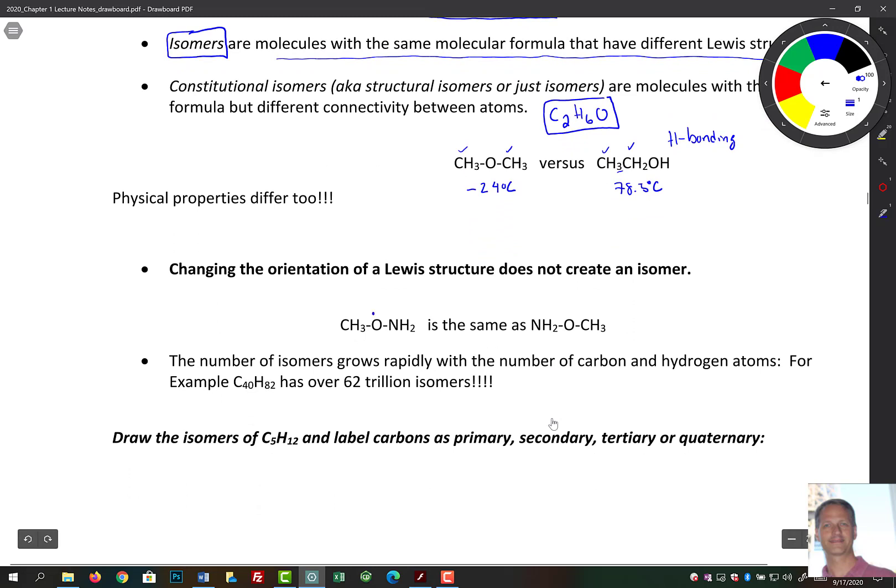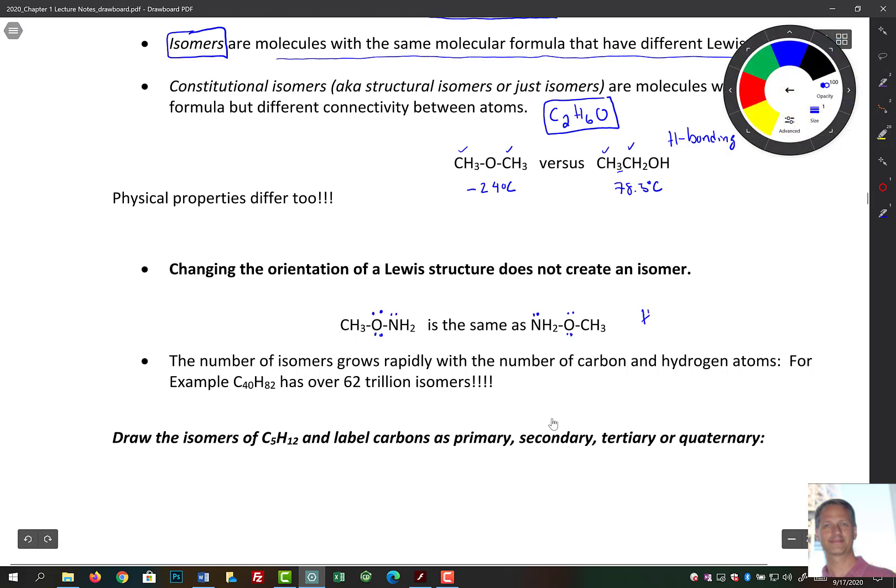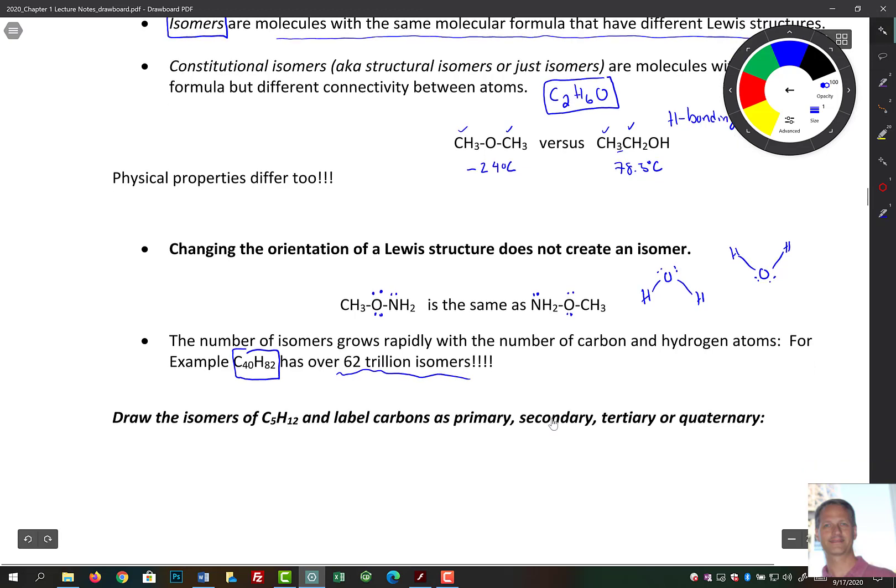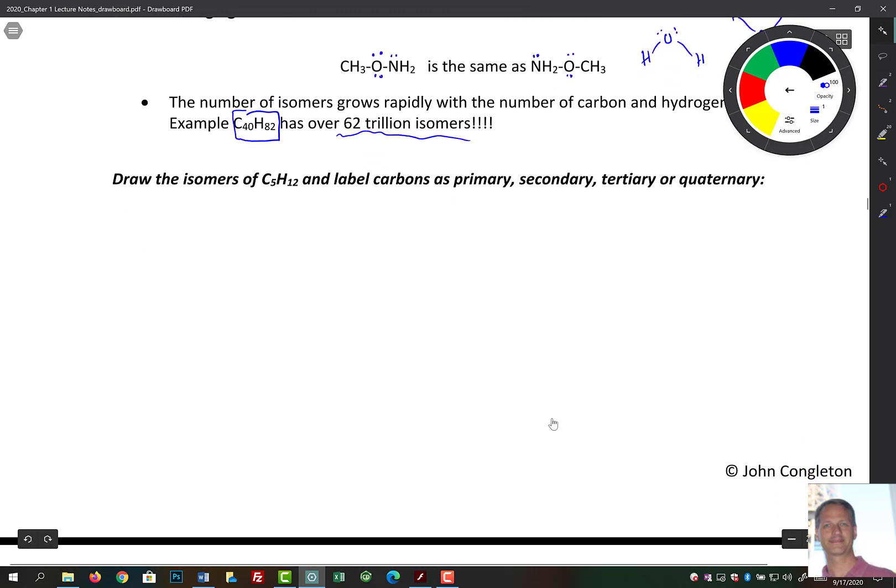So if we look down here below, here's a CH3 connected to an oxygen and an NH2. But if we just kind of flip that molecule around, you get the same structure. Well, it's kind of like water. So if you took water, drew it like this, and if we flipped it around and drew this, I think we'd all say these are both water molecules. So rotating it is not going to make a difference. Now, interestingly, the number of isomers grows rapidly with the number of carbon and hydrogen atoms. So for example, if you look at C4H82, it has over 64 trillion isomers. So we're not obviously going to have to do anything that crazy, but we are going to be asked to draw some isomers out.